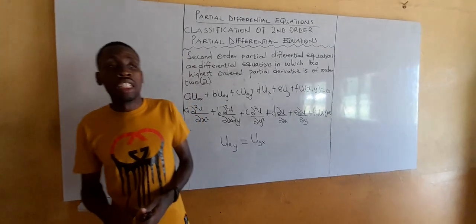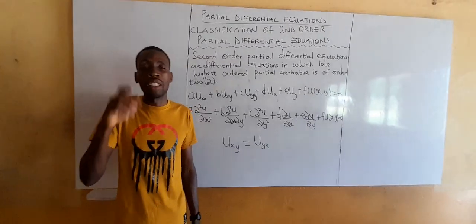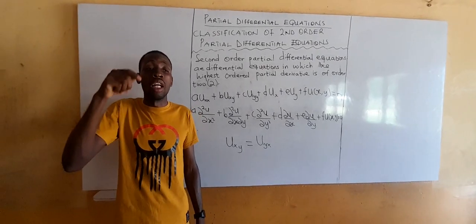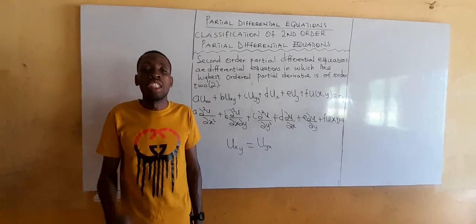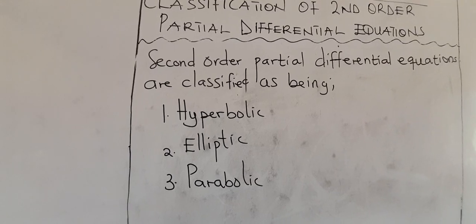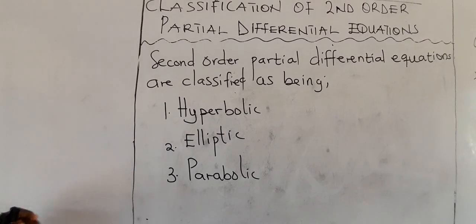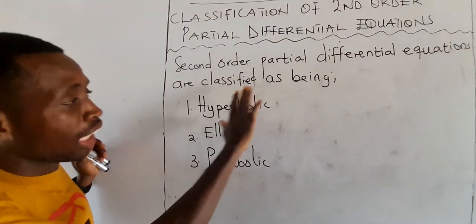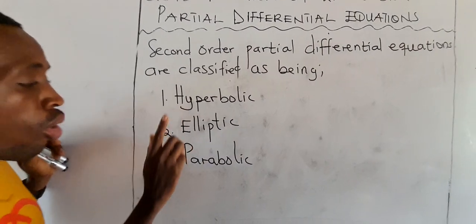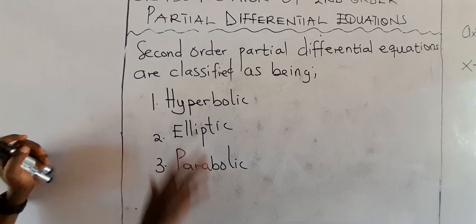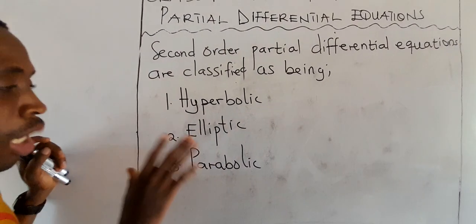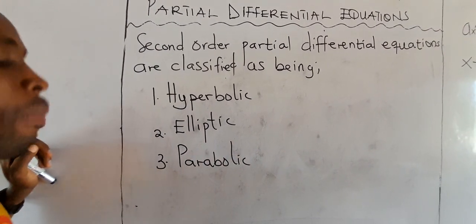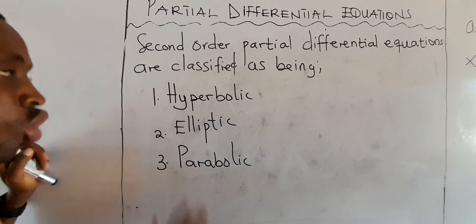The next thing we look at is what we use to classify partial differential equations — specifically second order partial differential equations. Second order partial differential equations can be classified as being hyperbolic, elliptic, and parabolic. These are the three classifications, so please take note of them: hyperbolic, elliptic, and parabolic.